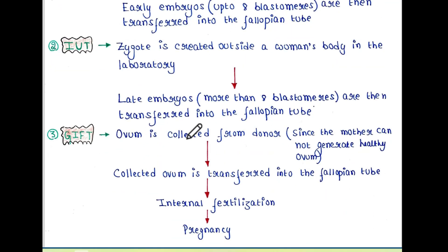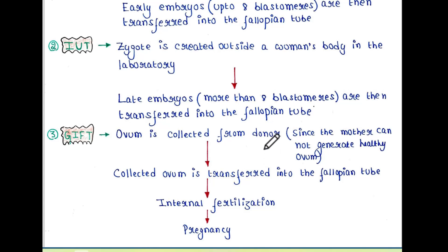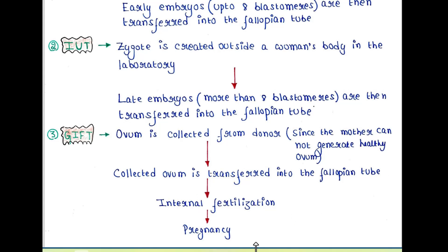Next process is GIFT. In this case, the ovum is collected from a donor, since the mother cannot generate a healthy ovum. The father is healthy and producing healthy sperm. So this collected ovum is transferred into the fallopian tube of the would-be mother, and since the sperm are healthy, internal fertilization is possible inside the woman's body, leading to pregnancy.